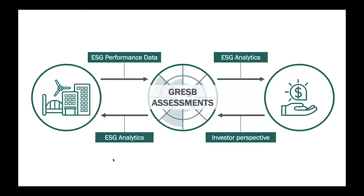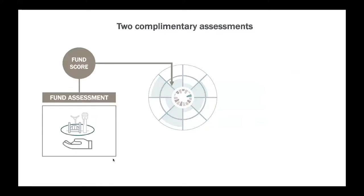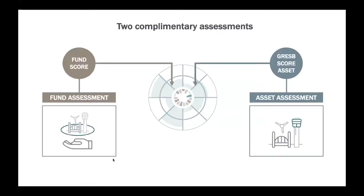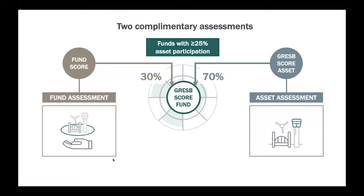Originally, on the infrastructure side, we had two complementary assessments. If we forget the public disclosure assessment for just a short while, we originally coordinate a fund assessment and an asset assessment, which run once a year. A fund will be able to participate with us, and if sufficient assets within their fund also participate, they get a GRES score on the fund. And that is essentially how GRES functions.